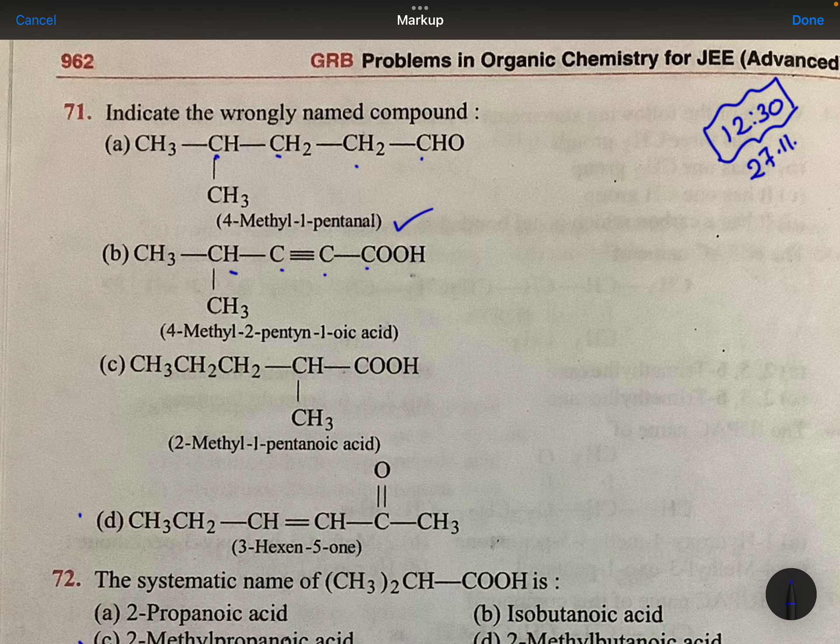1, 2, 3, 4-methyl, 2-pentanoic acid. Correct. 1, 2-methyl, 1-pentanoic acid. Correct.